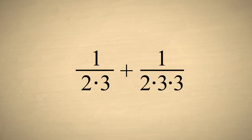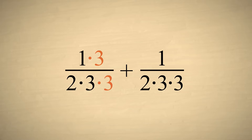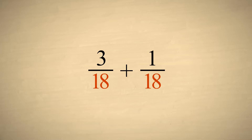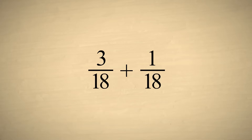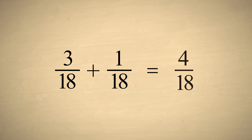We can make the two denominators the same by multiplying the top and bottom of the first fraction by three. The two fractions will then have a common denominator of eighteen, which is their least common denominator. And we can now add their numerators.